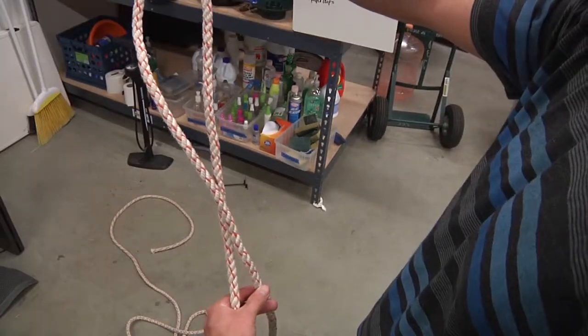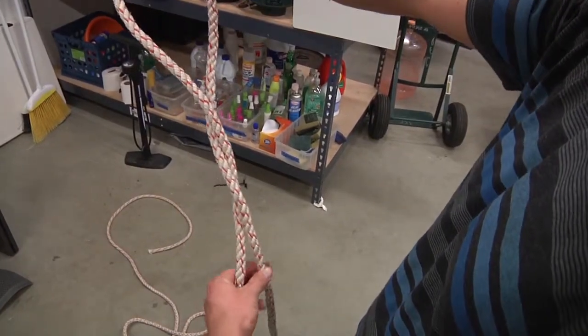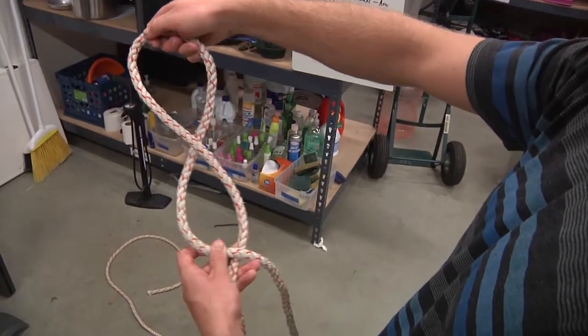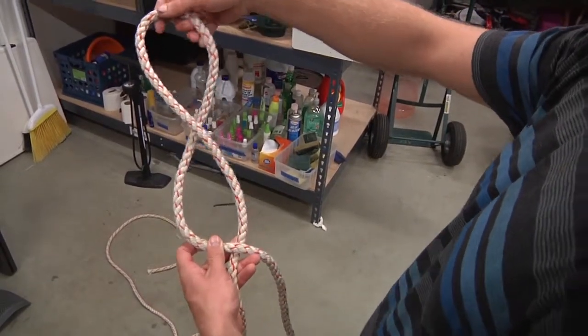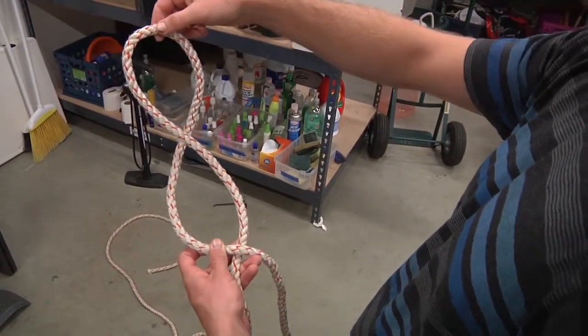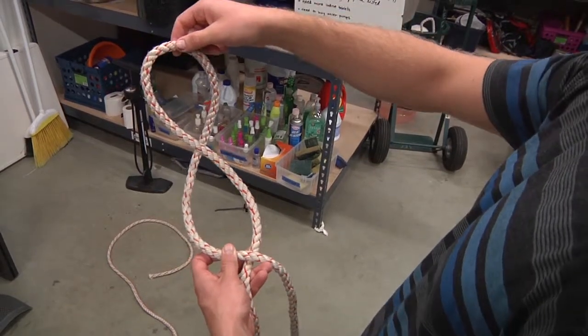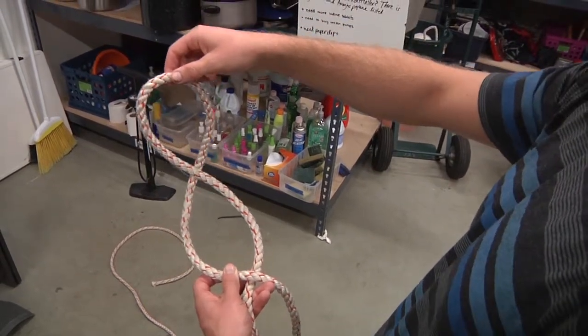You're going to twist it once. Then you're going to twist it again. And then right here you see you kind of have a snowman. So you want to take the head of the snowman, you want to go through the snowman's legs, and then through his stomach.